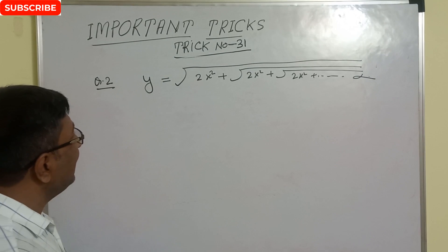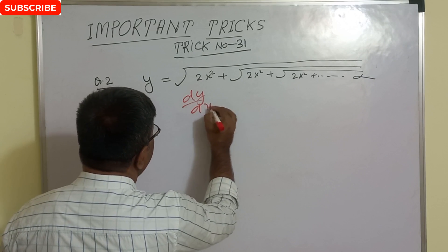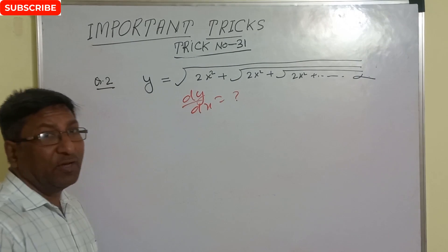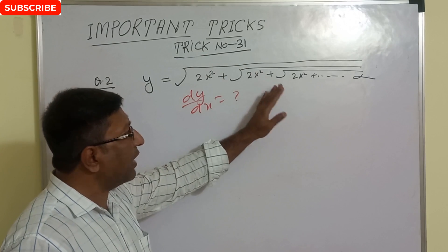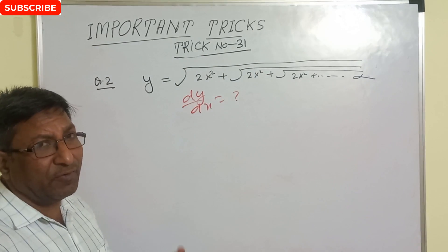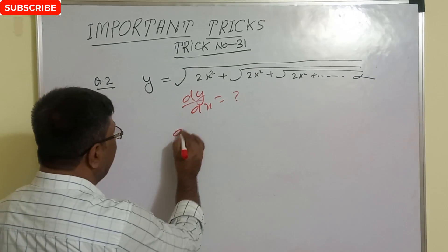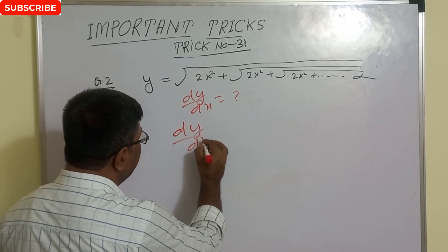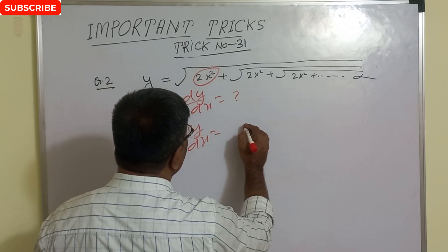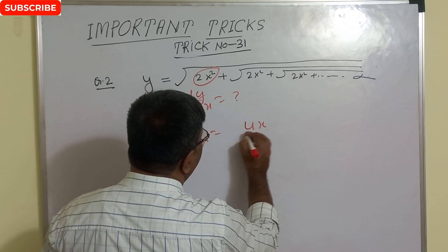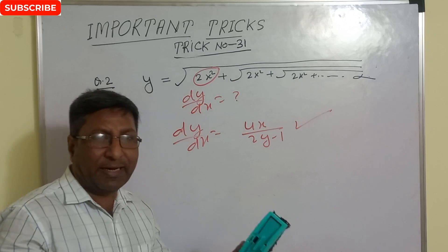Find dy/dx when y equals 2x squared plus root of (10x squared plus ...). For this type of question, there is a very simple technique. We can find directly dy/dx equals — the function is 2x squared — so derivative of 2x squared is 4x — divided by (2y minus 1). This is the correct answer.